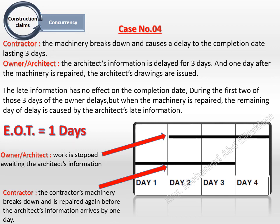Case number 6. Contractor situation: the machinery breaks down and causes a delay to the completion date lasting three days. Owner situation: the architect's information is delayed for three days, and one day after the machinery is repaired, the architect's drawings are issued.